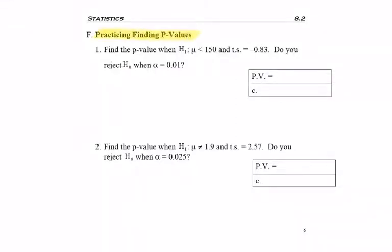Now we're going to practice finding p-values for a mean when sigma is known — the population standard deviation — so we'll use the z-table.